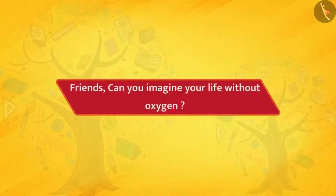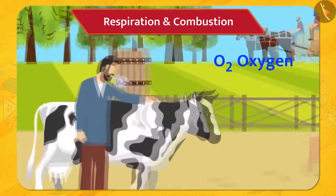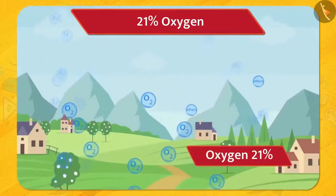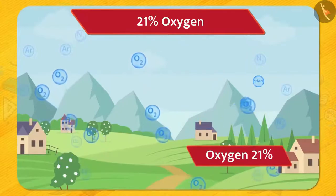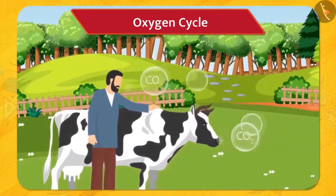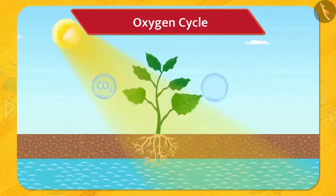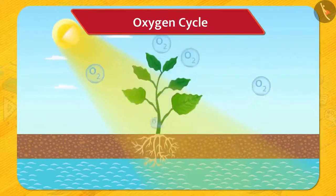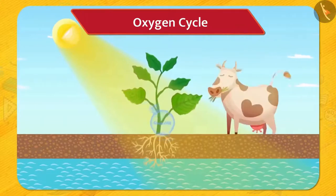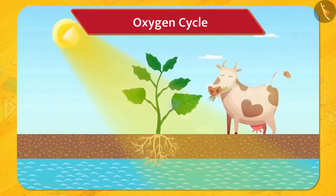Oxygen cycle. Friends, can you imagine your life without oxygen? Impossible. We cannot live even a few minutes without it. Oxygen is necessary for the respiration of living beings and it is also necessary for combustion. Around 21% of the atmosphere is oxygen and it's almost constant. Humans and animals take oxygen through the process of respiration and release carbon dioxide and water vapour. This carbon dioxide and water vapour is absorbed by plants to prepare their own food and oxygen by the process called photosynthesis. Plants store their food in the form of glucose, which also contains oxygen. When an animal consumes the plants, glucose enters the animal's body and again they release carbon dioxide during respiration. In this way, oxygen is absorbed from and released into the atmosphere and its percentage remains constant.